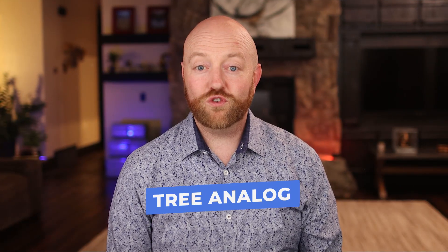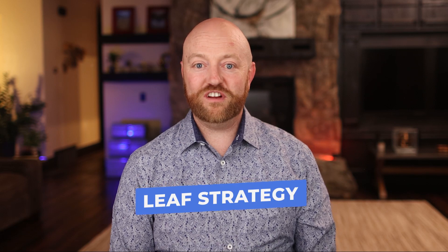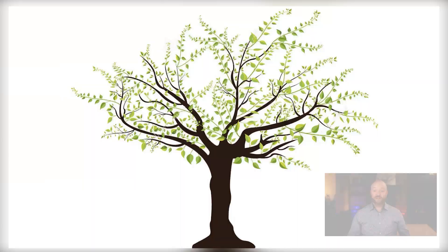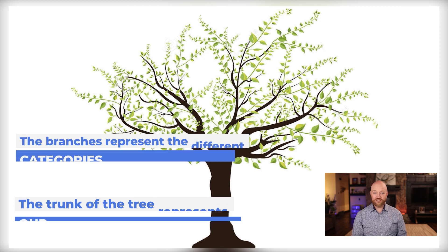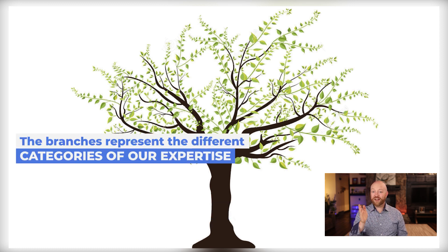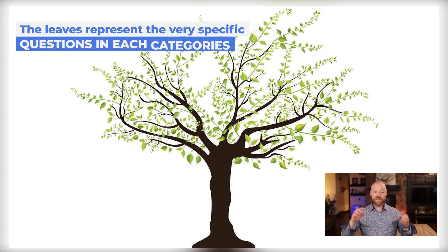Let me share with you the tree analogy and teach you my leaf strategy. A tree has a broad trunk that goes out to branches that goes out to the leaves. This is all we have to visualize when we think of titles for our videos. The trunk of the tree represents our broad area of expertise. The branches represent the different categories of expertise that we have, and the leaves represent the very specific questions that people are asking in each of those categories.